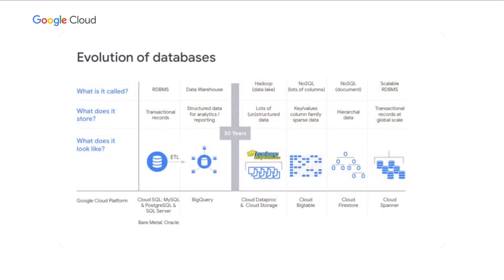Let me now talk about the evolution of databases. Some 30, 40, or 50 years ago, this was really dominated by traditional relational database management systems where customers needed to capture transactional records — the classic example being the financial record where you're debiting one account and crediting another, and you want that to happen as a single operation. RDBMS systems became the mainstay of many enterprise applications for managing data. Data was then lifted and moved to a data warehouse via ETL processes — extract, transform, load — which would restructure the data for analytics and reporting. This became a many-billion-dollar industry that grew very strongly for many years.